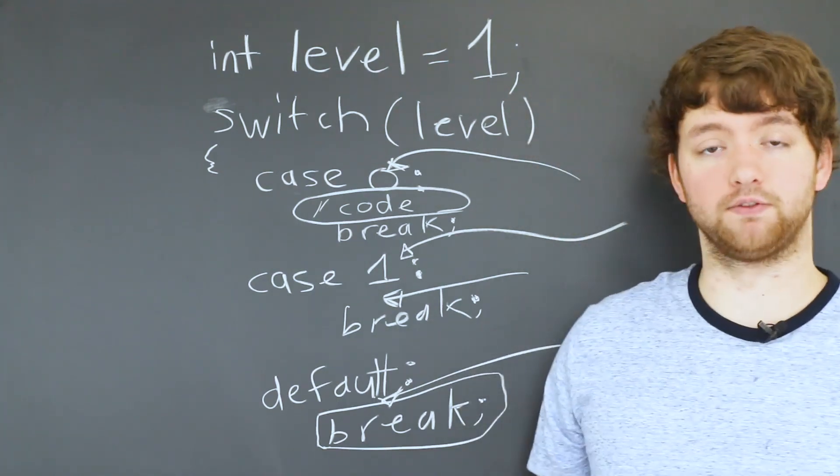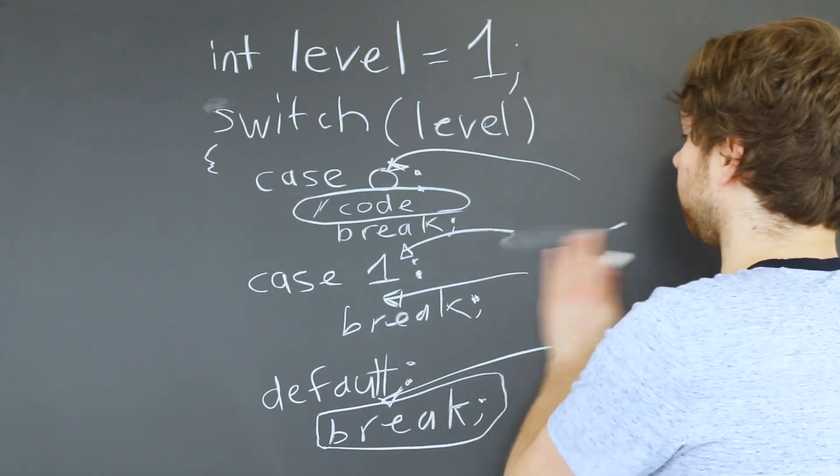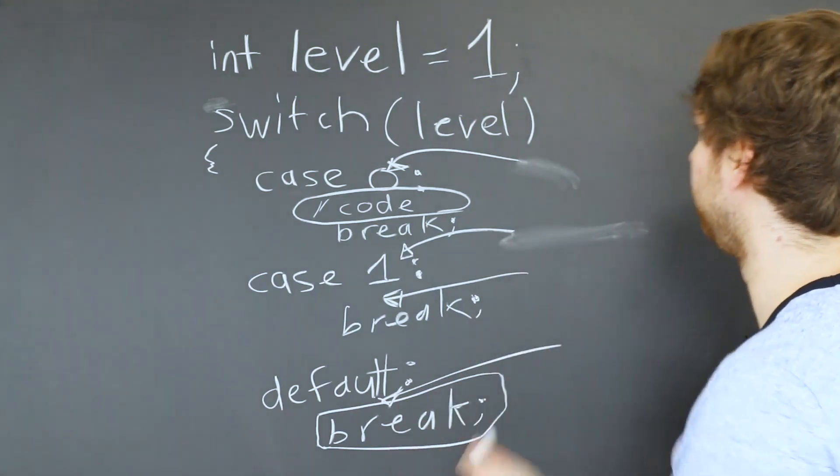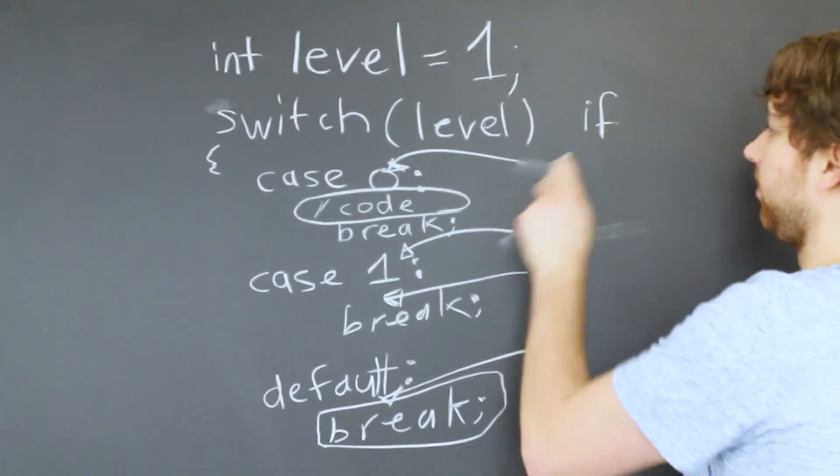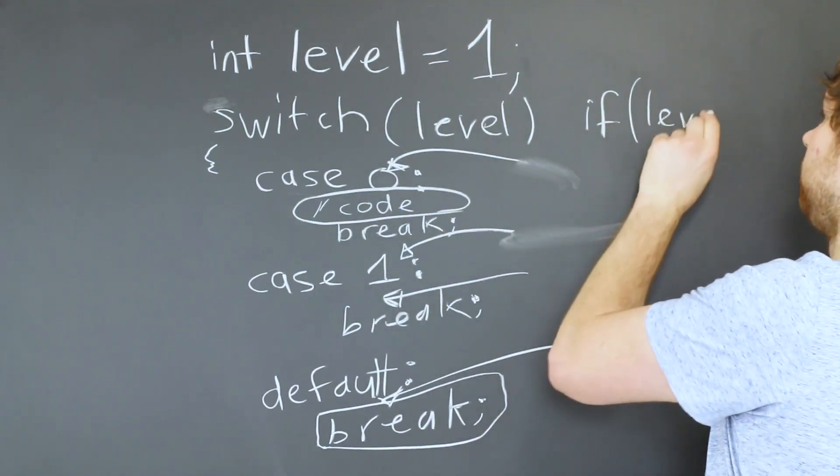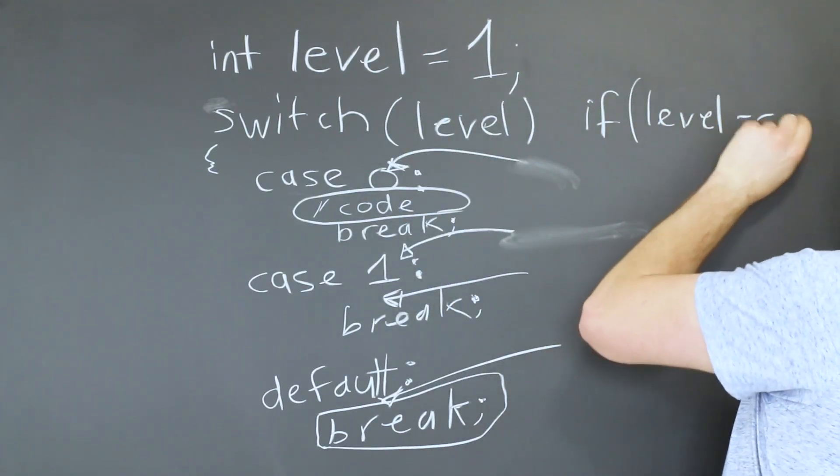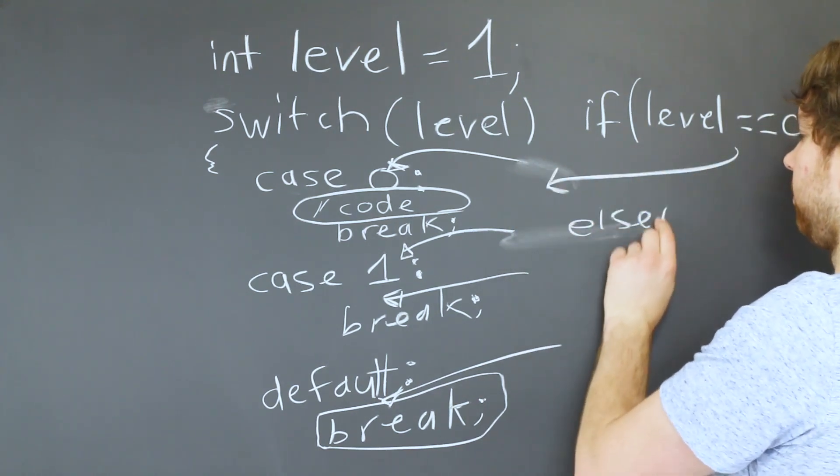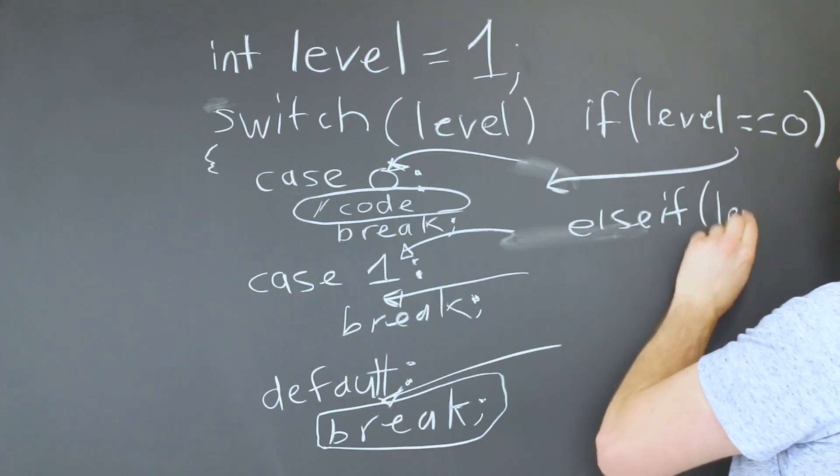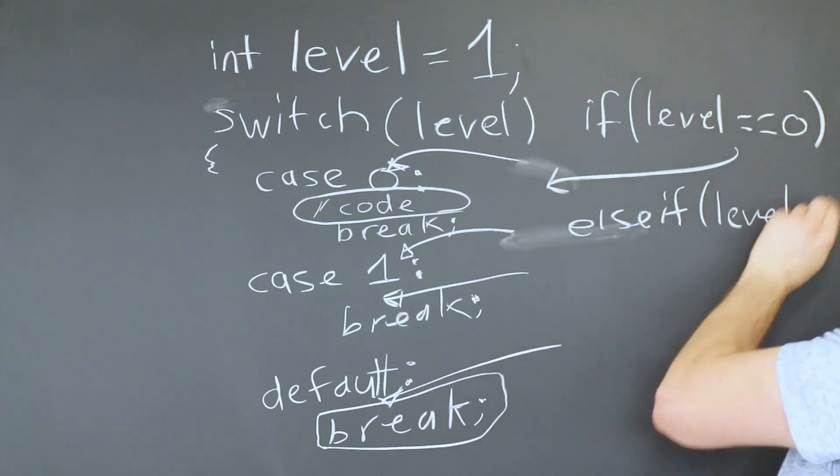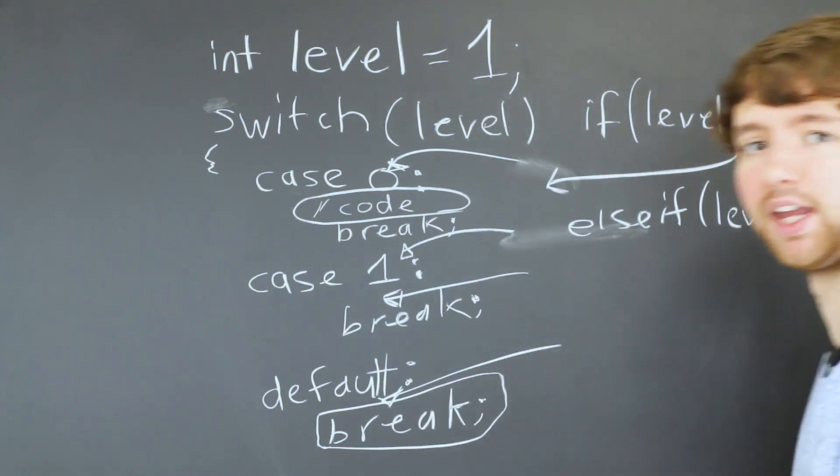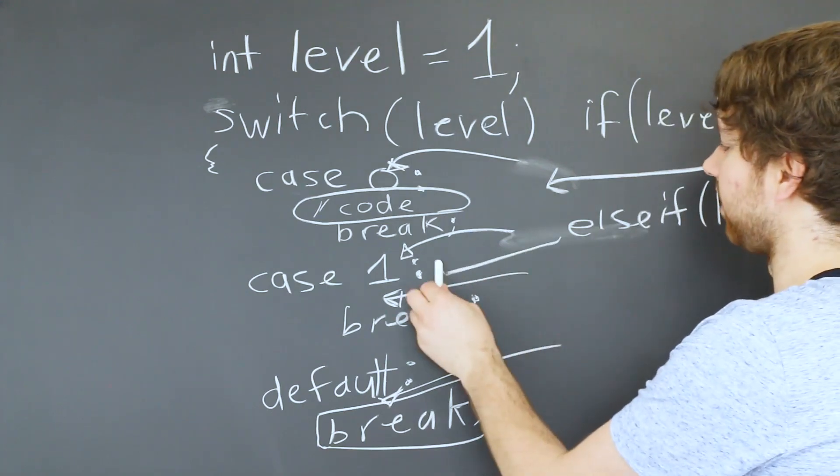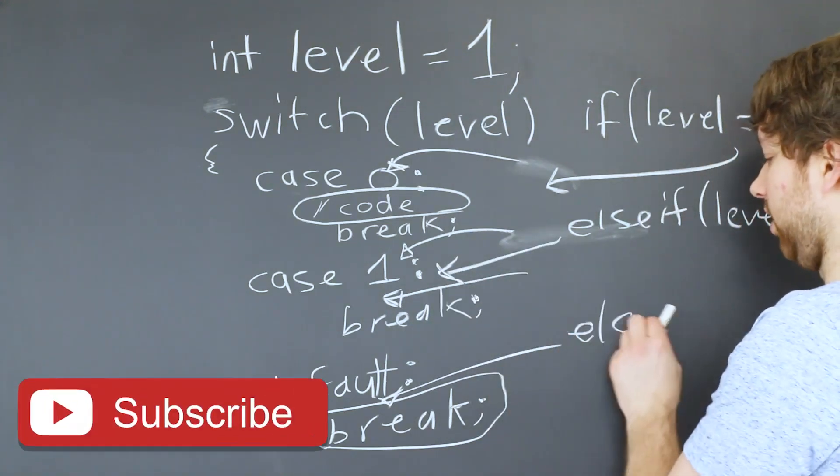So if we wanted to basically convert this to an if statement, I'm not going to write it all out, but I'll give you a structure. It would be like if level is zero, that would be this case. And then else if level is one. Oh, I'm running out of room. You guys probably can't see that, but it's okay. That's going to be this case. And then lastly, we'll have an else here.